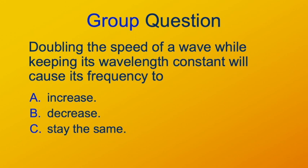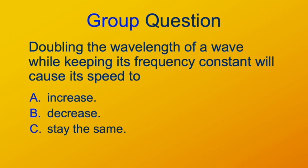How about if you double the speed of the wave and keep the wavelength constant — the distance between successive crests is the same but they move through space twice as fast. Does that make the frequency increase, decrease, or stay the same? The answer is the frequency increases, because you'll have twice as many crests going past any point per unit time. And if you increase the wavelength while keeping the frequency constant, what does that do to the speed? The answer is the speed increases — the same number of waves per unit time but the waves are farther apart, so they have to be moving faster.